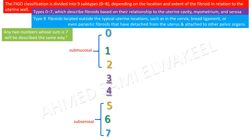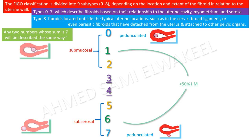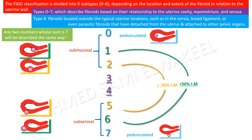Any two numbers whose sum is seven will be described the same way. Zero plus seven equals seven, so both are pedunculated — zero is intracavitary and seven is pedunculated subserosal. One plus six equals seven, so both are less than 50% intramural. Two plus five equals seven, so both are equal to or more than 50% intramural. Three plus four equals seven, so they are also described the same way.